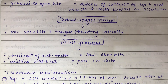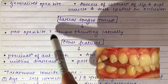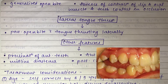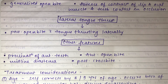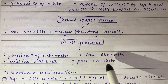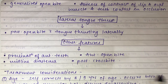Lateral tongue thrust presents with posterior open bite and the tongue thrusting laterally — for example into the space between canines and premolars. Other clinical features of tongue thrusting include proclination of anterior teeth, anterior open bite, midline diastema, and posterior crossbite.